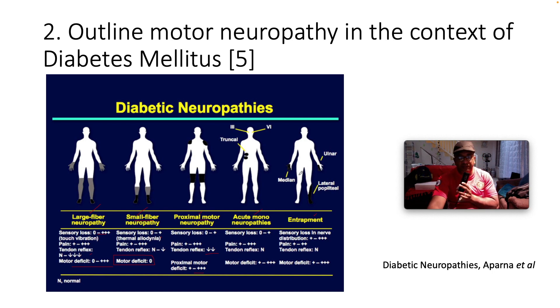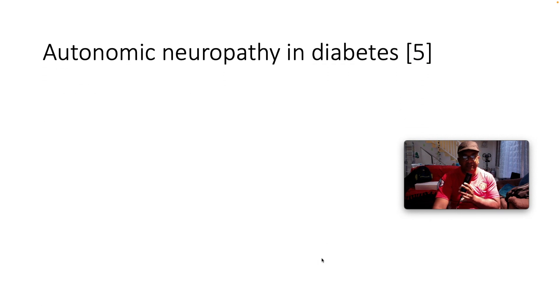Entrapment neuropathy is usually the median nerve in the form of carpal tunnel syndrome. You can also have ulnar compressive neuropathy and lateral popliteal entrapment — these can all occur in the context of diabetes.